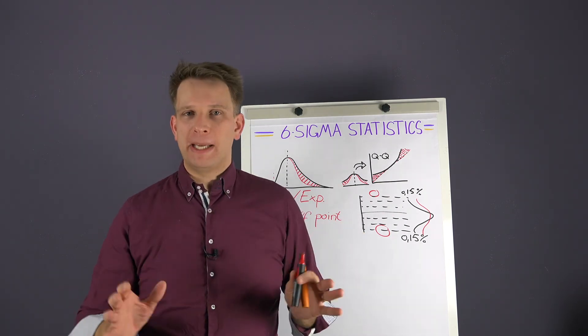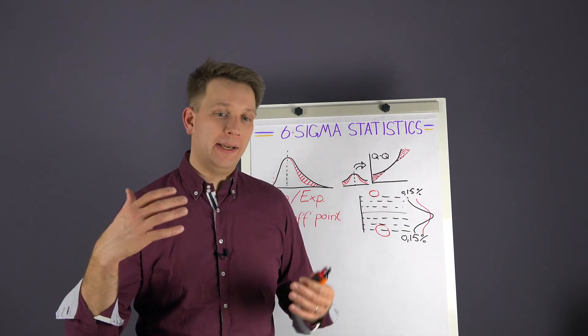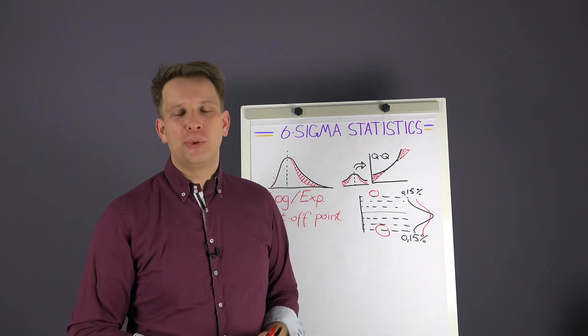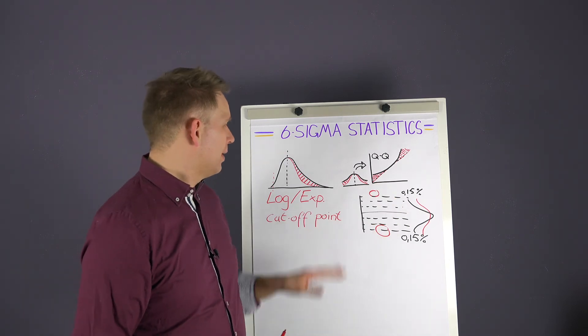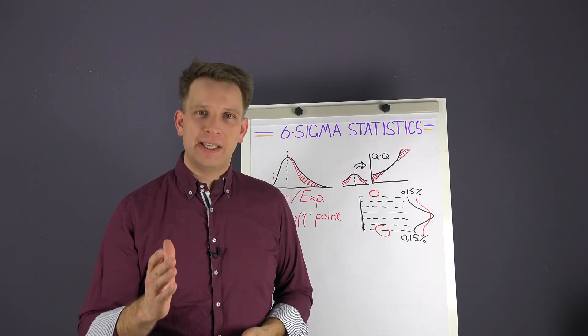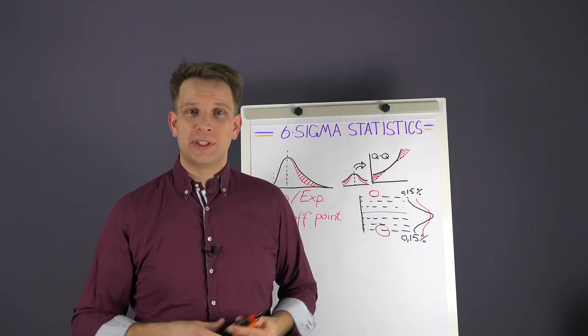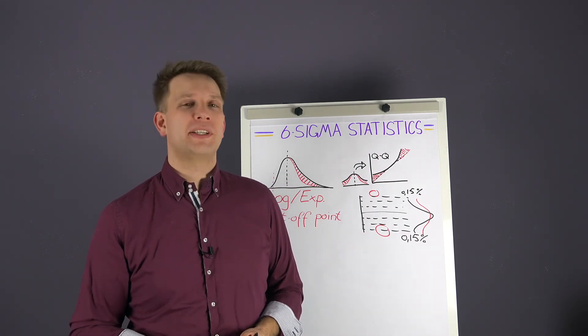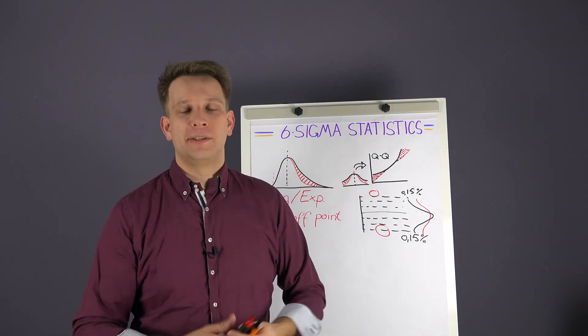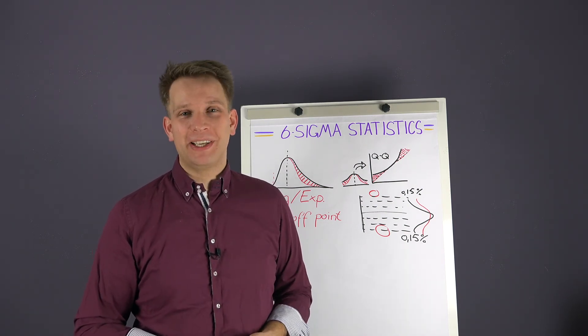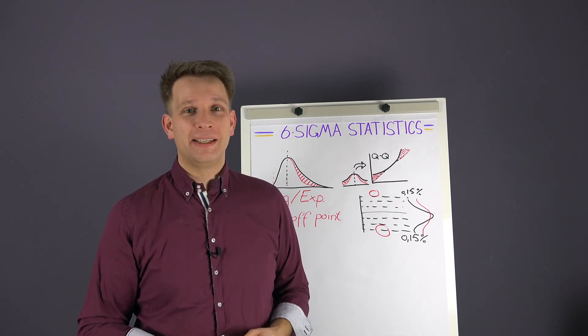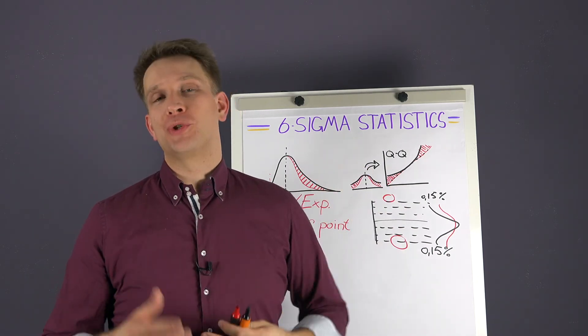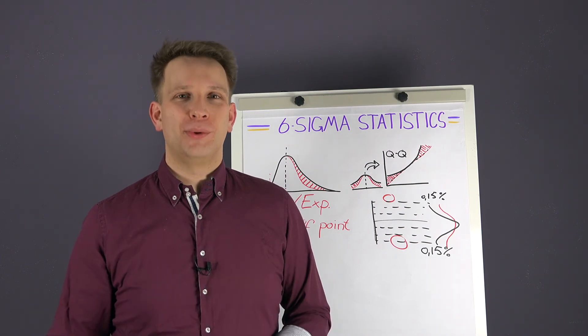But indeed the big majority of continuous improvement specialists and everyone involved in continuous improvement in your organization at your factory, they don't need to get into this level. Go for the control charts, make sure you have histograms, that you visualize your data. That is definitely enough for 80-90% of people using Six Sigma. Just make sure that a couple of people in your organization or fixed consultants know how to check the validity and just from time to time make sure that everything is checked and corrected where needed. And this is how I think the statistics behind the tools that we use should be known within your organization.